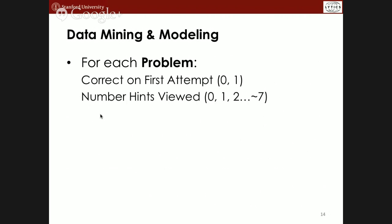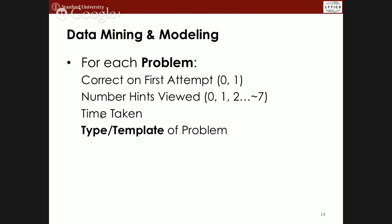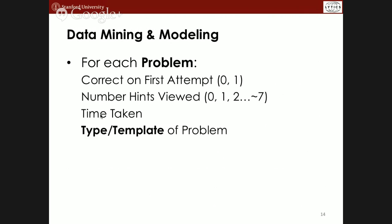For each problem we can look at whether they got it correct on the first attempt (0 or 1), and how many hints they requested. On this site, getting a hint is graded as being wrong — if you need a hint, you got the problem incorrect. We also track how long they take and the type of template. The main point was to start thinking about the kinds of analyses you can do.